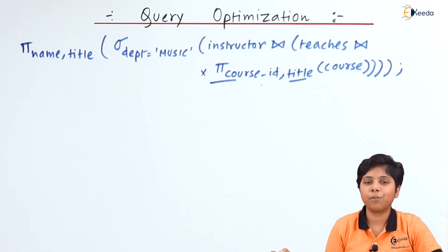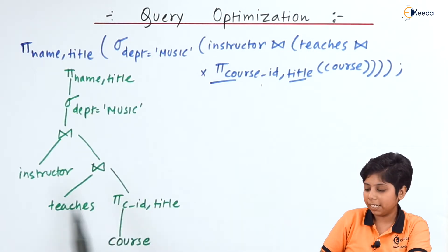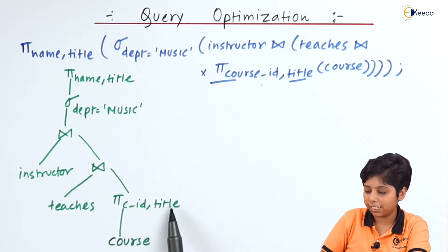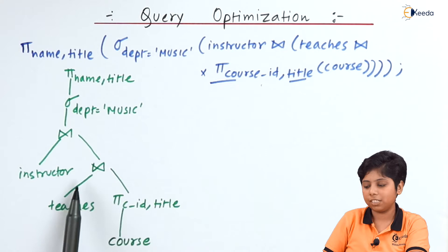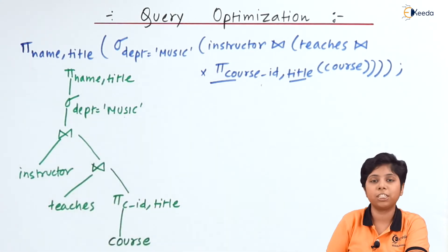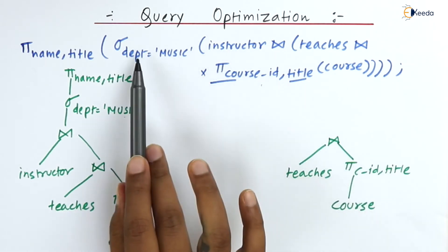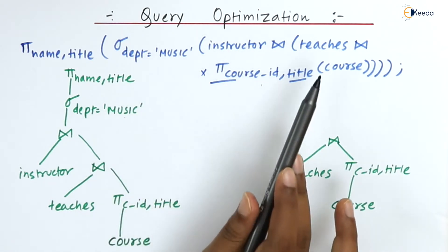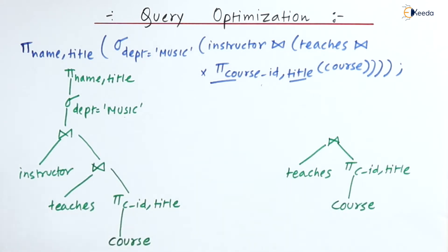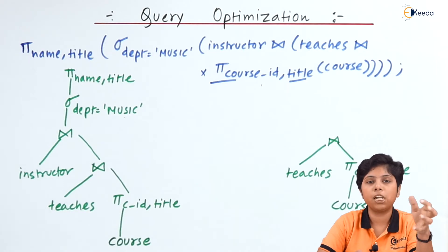We consider the initial expression tree and from it form a logically equivalent expression tree. The initial tree is: projection on course ID and title over course, joined with teaches, joined with instructor, with selection over department equals music, and a final projection of name and title. The equivalent tree first applies the selection over instructor.